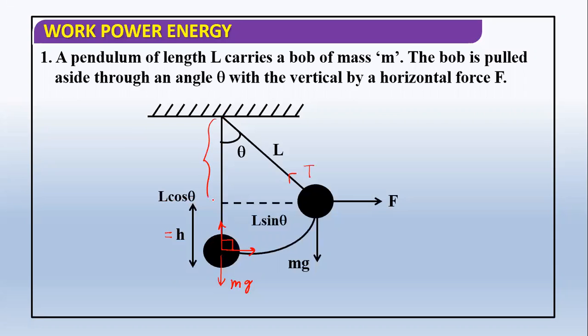The total length is L, and this vertical component is L cos theta, so the height change will be L minus L cos theta. Therefore, work done by gravity will be negative mg times h, which equals negative mgL times one minus cos theta.